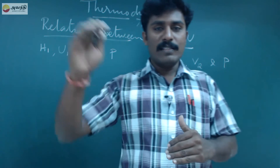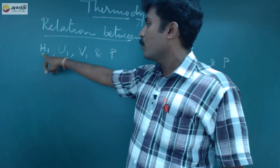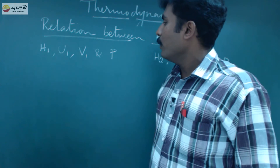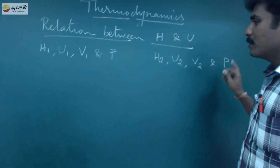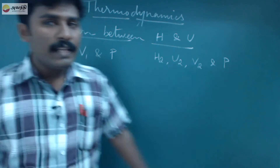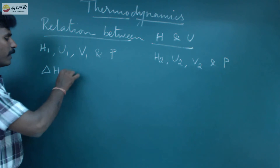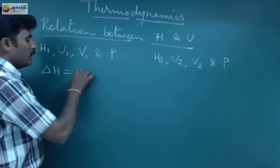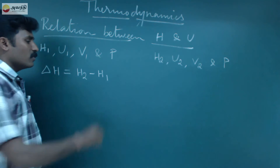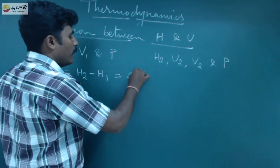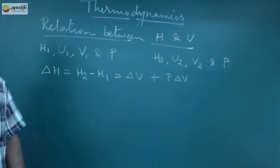When the system undergoes from initial to final state, ΔH is the change in enthalpy. The change in enthalpy is H2 minus H1, from initial to final state. So ΔH is equal to ΔU plus PΔV. Here ΔU is U2 minus U1, and ΔV means change in volume.